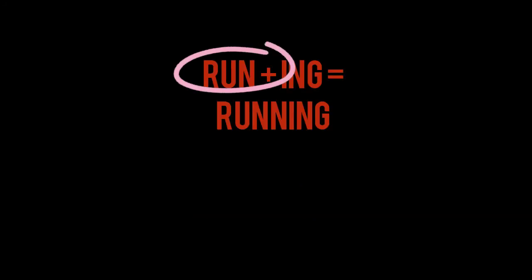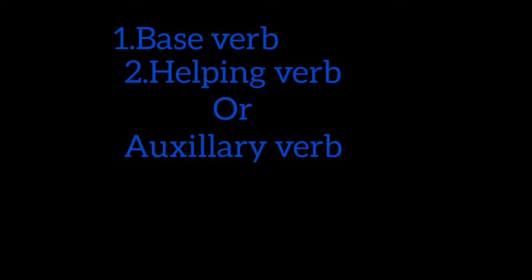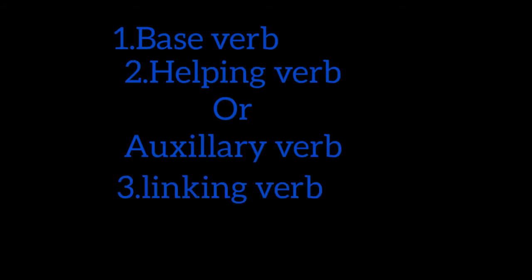For example, 'running' — 'run' is the base verb. We are going to discuss the types of verbs. Basically there are three types: the first one is base verb, the second one is helping verb or auxiliary verb, and the third one is linking verb. We will be discussing these types in the coming videos.